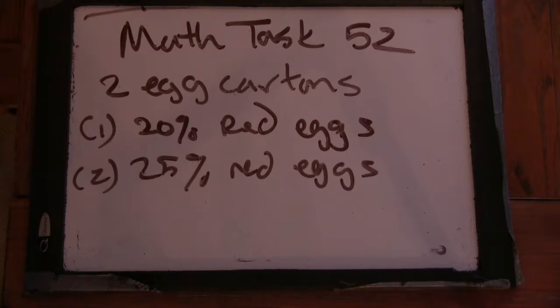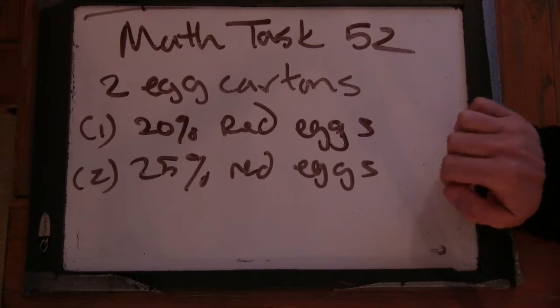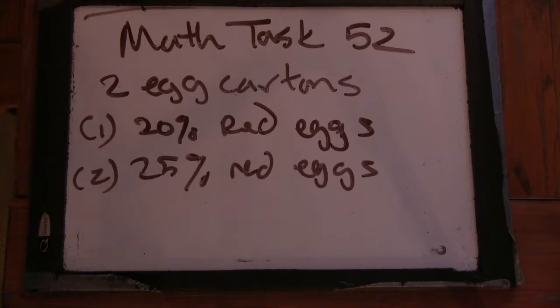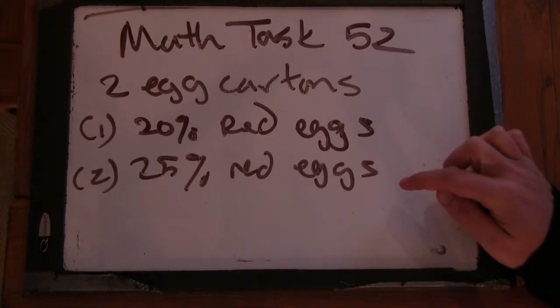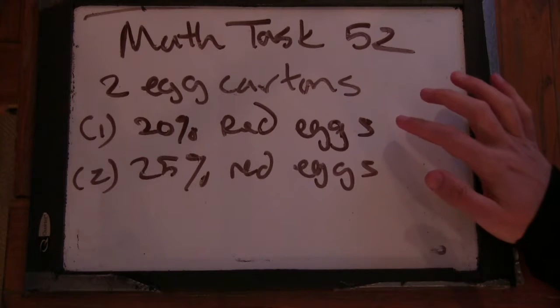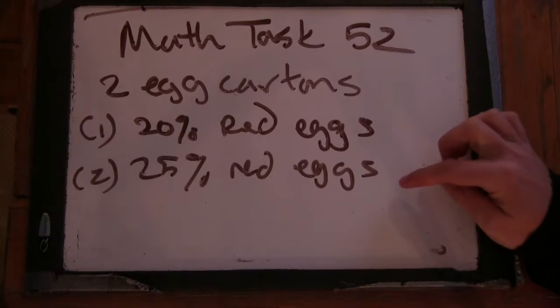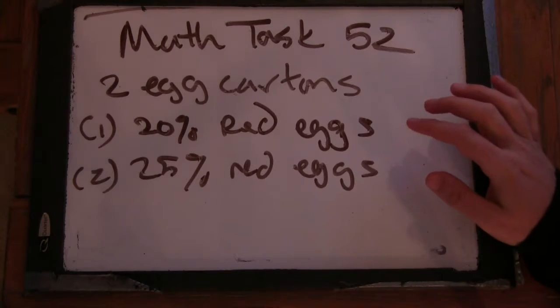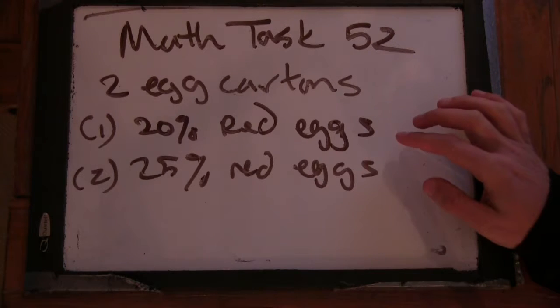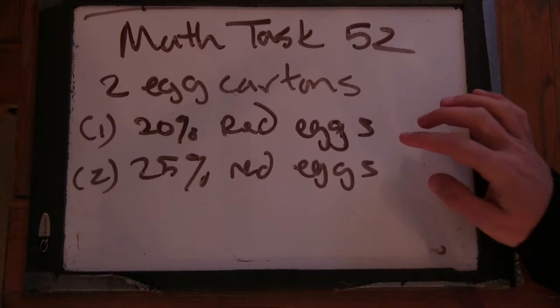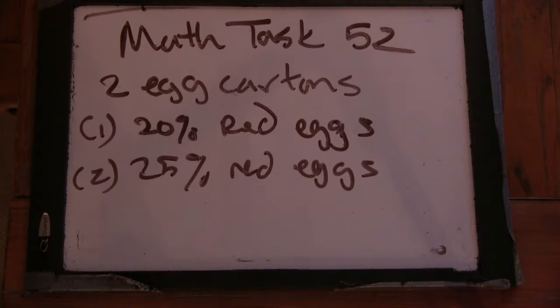And the problem went something like this. You have two egg cartons. One has 20% red eggs. The second one has 25% red eggs. If the one that has 25% red eggs has three times as many eggs as the first one, is that how it worked? Yeah. The second one has three times as many eggs as the first. So the one that has 25% red eggs has three times as many eggs. Three times as many eggs as the first or three times as many red eggs? Three times as many eggs. Then what's the total percent of eggs that are red? Okay. This is a good problem.